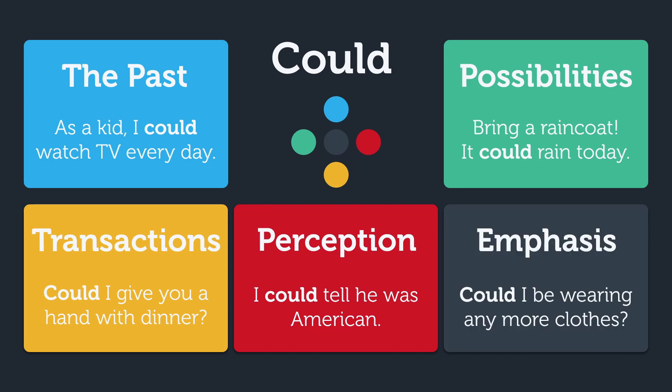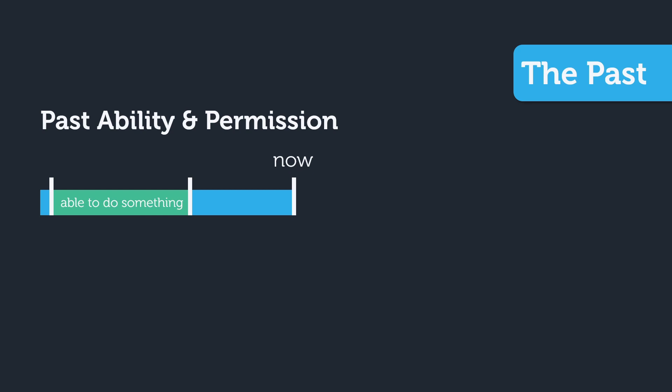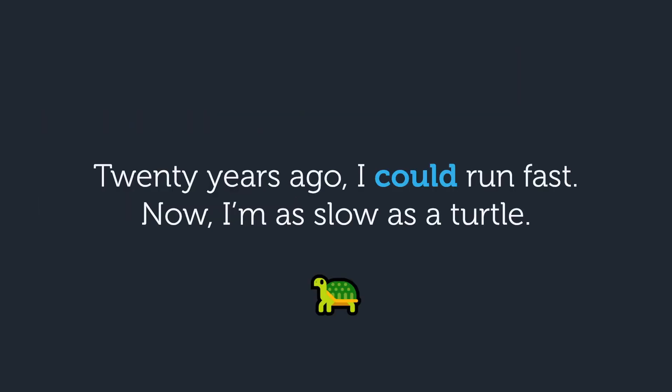Now that we have our categories ready, let's look at each one in more detail so you can start to master this verb. The first way we can use 'could' to talk about the past is regarding ability and permission — it allows us to talk about something that a person was able to do for a while. Here's an example: 20 years ago, I could run fast. Now, I'm as slow as a turtle.